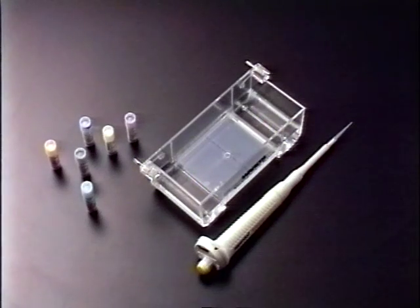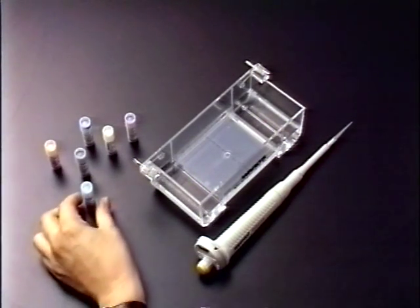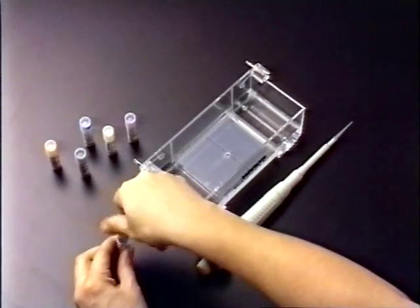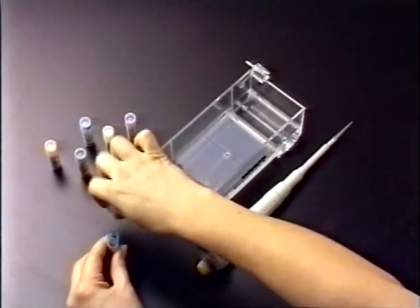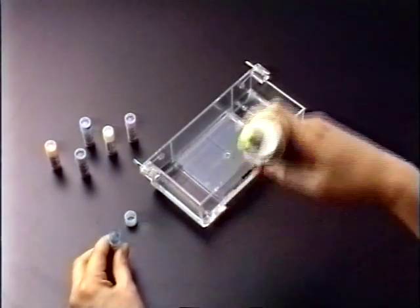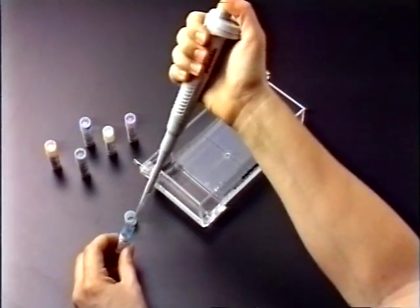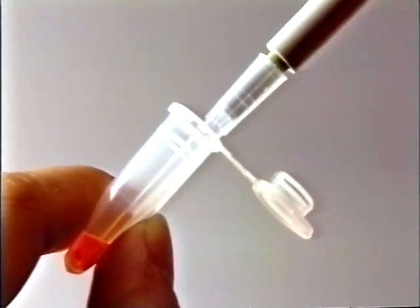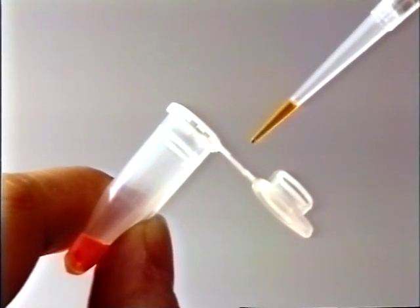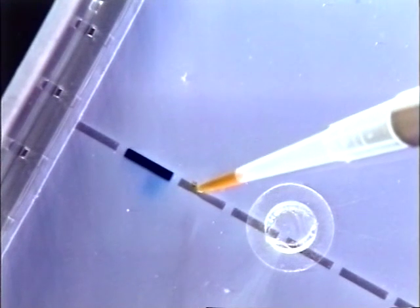The samples used in electrophoresis should be measured carefully. Use a micropipette to draw a measured amount. Draw 10 microliters of sample into the micropipette tip. When loading, be careful not to pierce the bottom of the well.